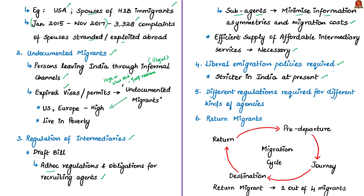The authors tell that different regulations should be presented for different kinds of agencies. For example, student enrollment agencies have a different business model and a completely different customer base — the students applying overseas. But the present draft bill has prescribed the same regulations for all, calling them recruitment agents.